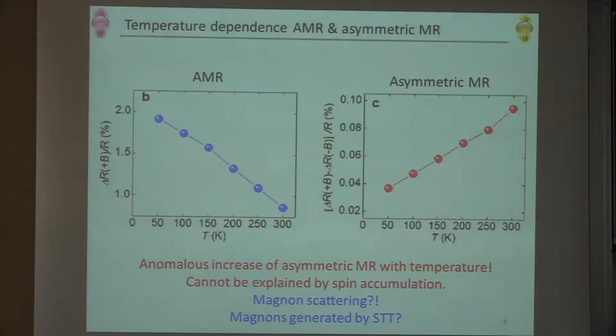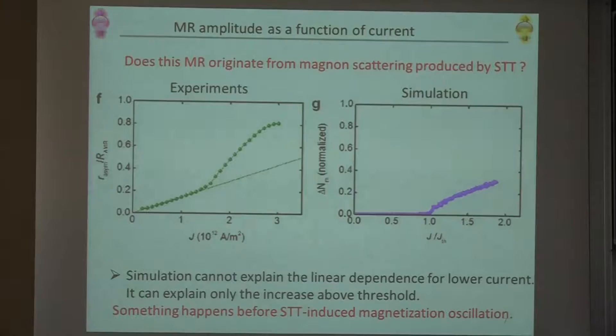I think this cannot be explained by the idea of simple spin accumulation at the interface between magnet and non-magnet. So now we have an increase of the effects with increasing temperature. The first candidate should be magnon scattering. Actually, we have an increase of this effect by increasing injection current density. So it means if this is due to magnon scattering, we can increase the magnon number by injecting current. So first idea is the magnons which are generated by the spin transfer torque.